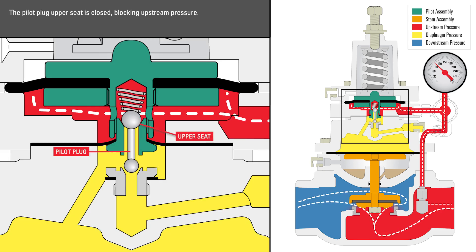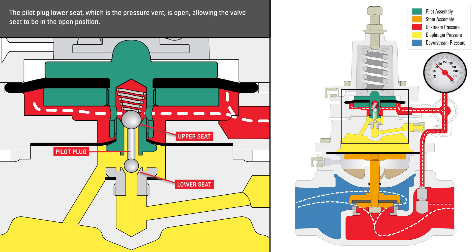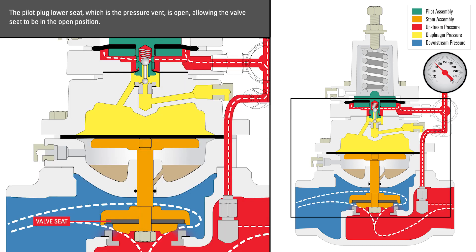The pilot plug upper seat is closed, blocking upstream pressure. The pilot plug lower seat, which is the pressure vent, is open, allowing the valve seat to be in the open position.